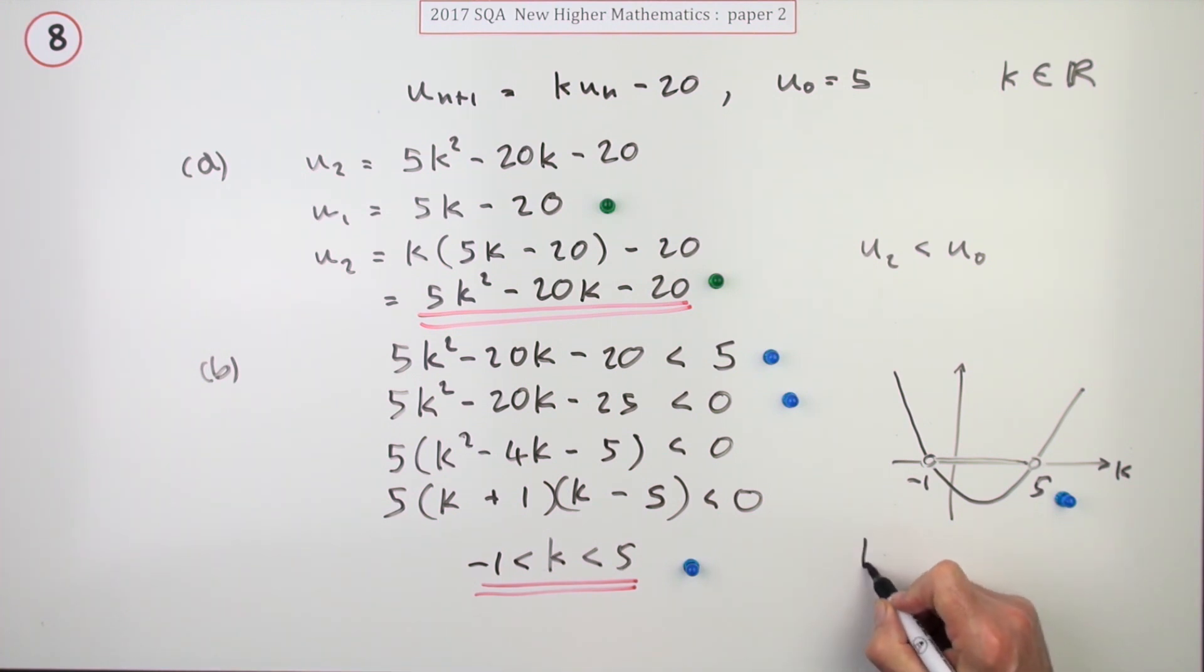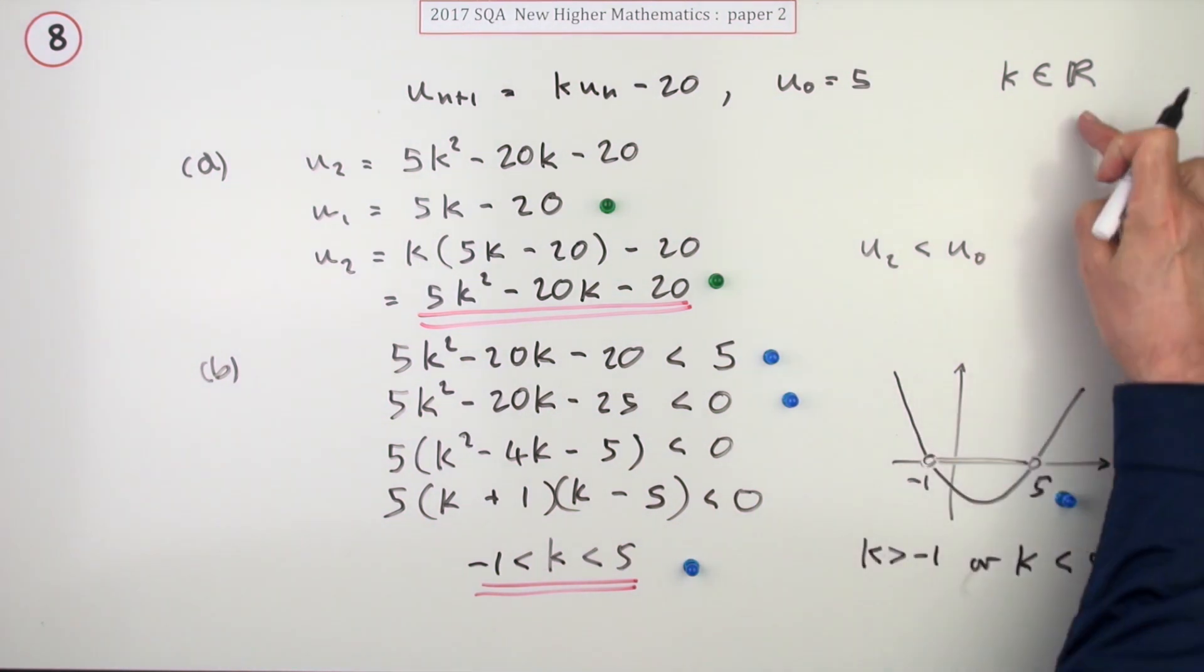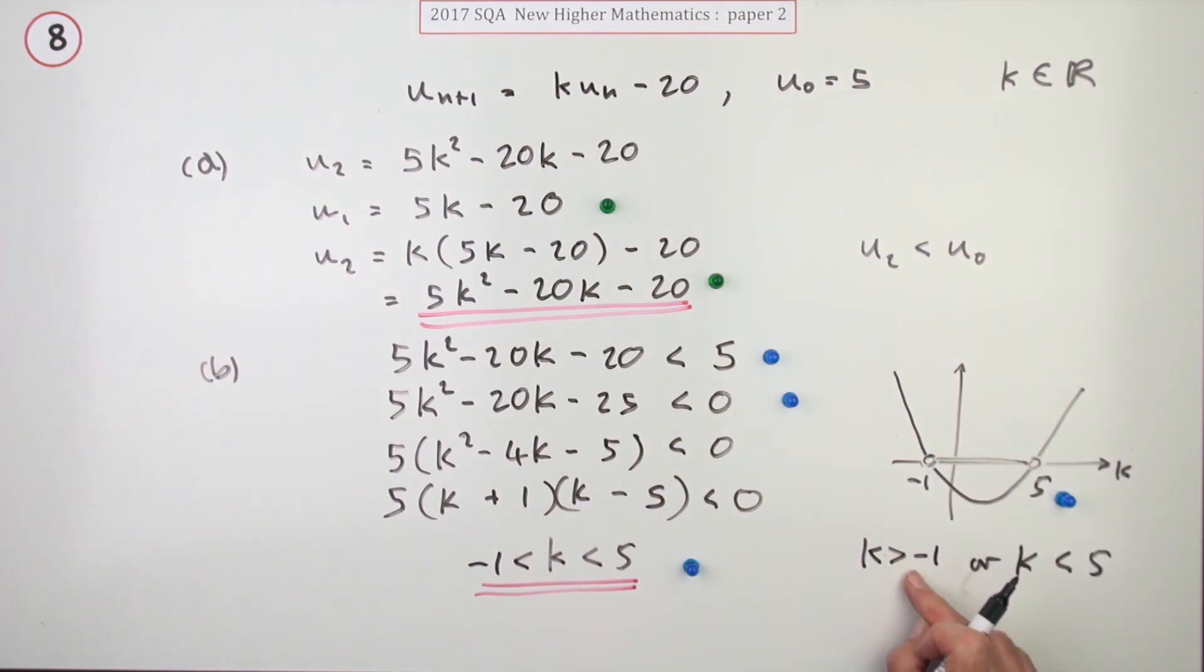It's best to write it that way. They let you off if you just put the two in separate statements, k is greater than negative 1 with a comma and k is less than 5. That's been a bit lenient. What you shouldn't say is OR because that would include all of the real numbers. If you wanted to write it with a statement in between, that would have to be AND, meaning both have to be true at the same time.